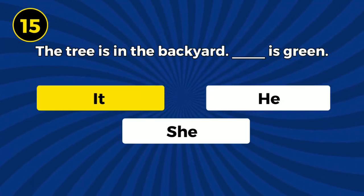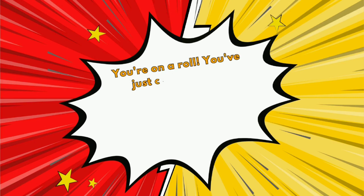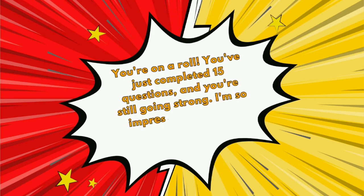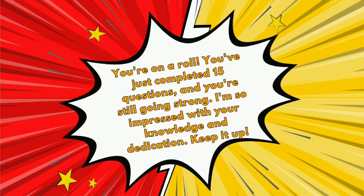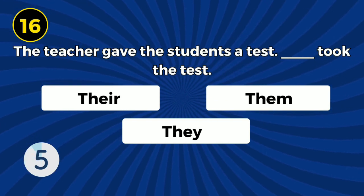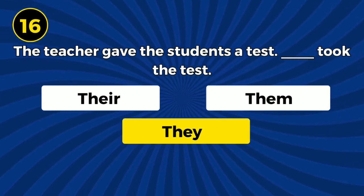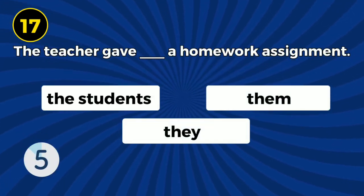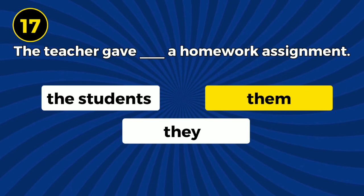The tree is in the backyard. It is green. The teacher gave the students a test. They took the test. The teacher gave them a homework assignment.